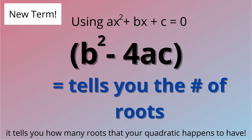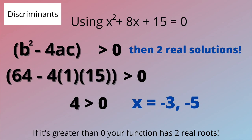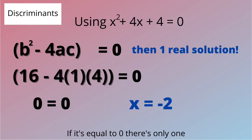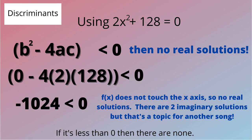It tells you how many roots your quadratic has. If it's greater than zero, your function has two roots. If it's equal to zero, there's only one. If it's less than zero, then there are none.